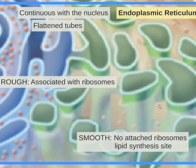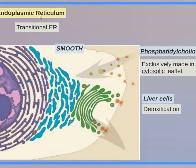Since all membranes contain phospholipids, the smooth ER is where the cell grows its membrane — how the cell gets larger or makes new organelles. Transitional ER is somewhere in between, where materials are processed and moved. In liver cells, the smooth ER is known for detoxification.